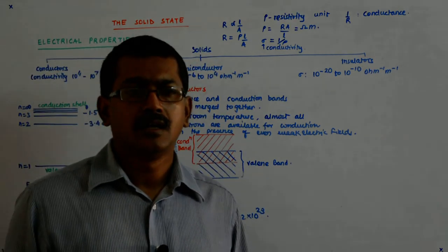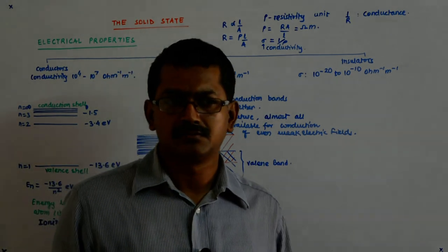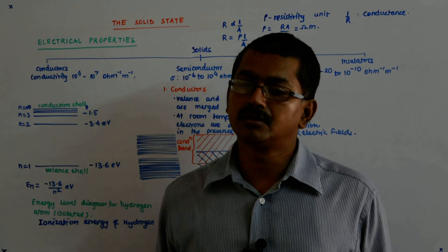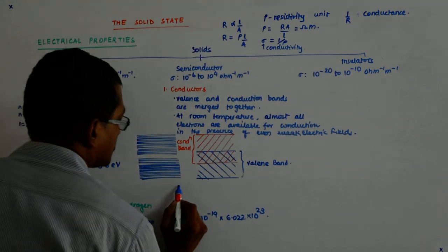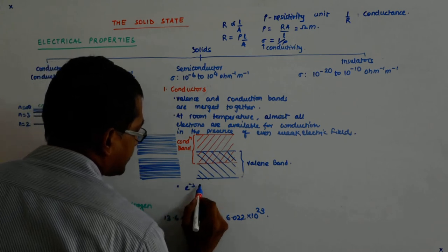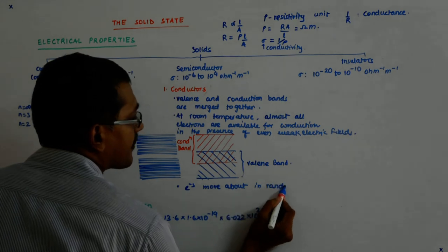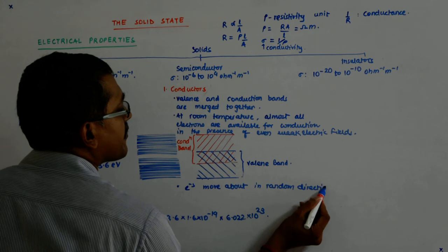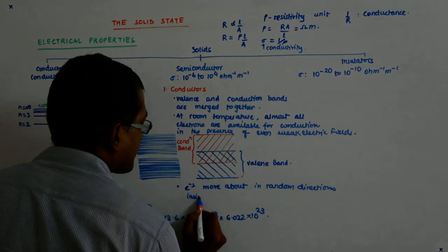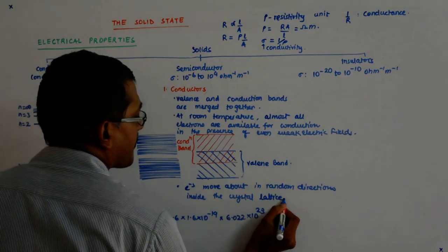The electron keeps on moving inside the lattice randomly. So many times it's called an electron cloud or electron gas as well. So the electrons move about in random directions inside the crystal lattice and are called electron gas or electron cloud.